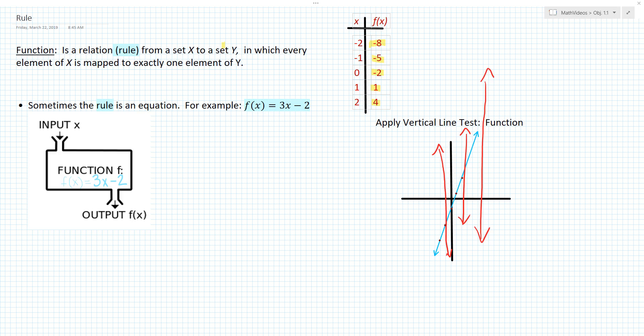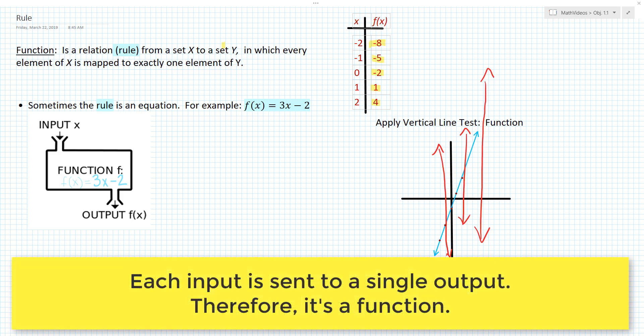Another way to see that this equation is a function is when we look at the table of values. We could see that no matter what we picked for the input, that input only went to one particular output. That makes sense. If you triple a number and then subtract 2, you're going to get a single value. That is why this equation is a function.